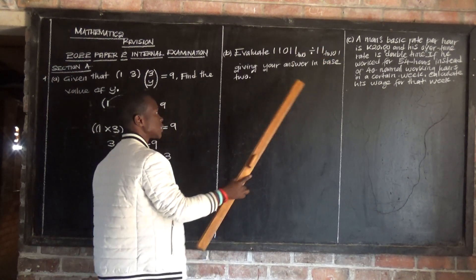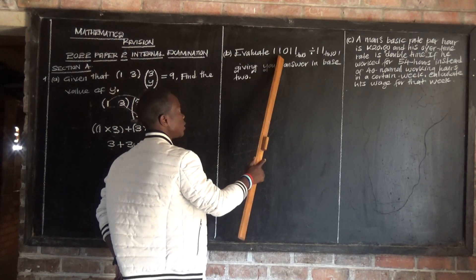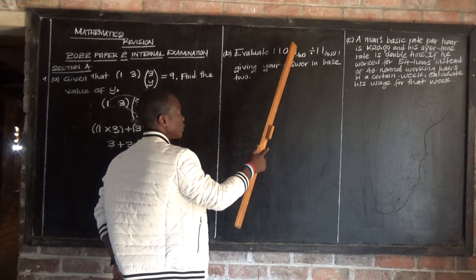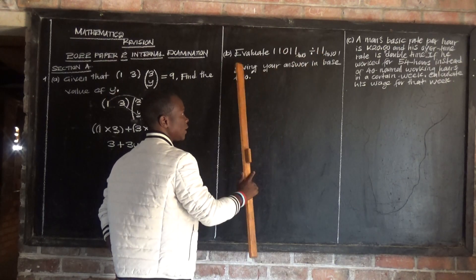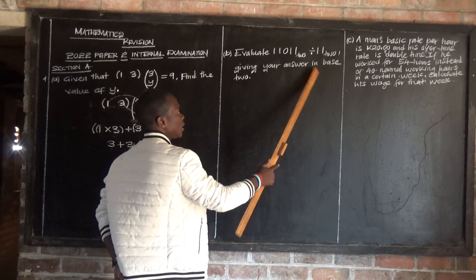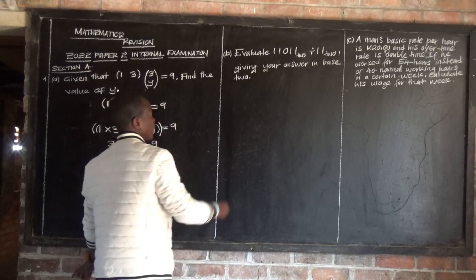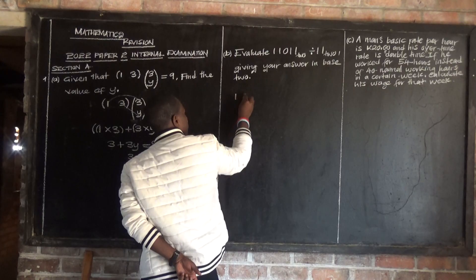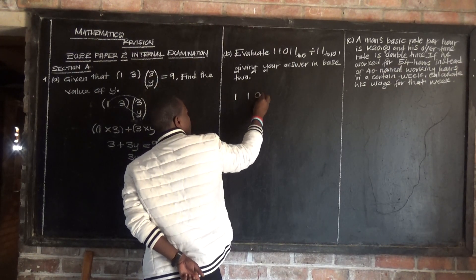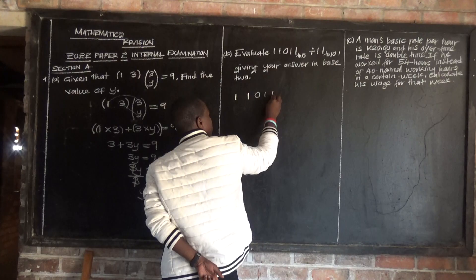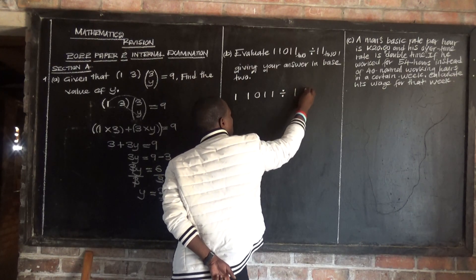We are told to give our answer in base 2. So the question says: evaluate 11011 base 2 divided by 11 base 2, and give your answer in base 2. So we are dividing 11011 by 11, both in base 2.